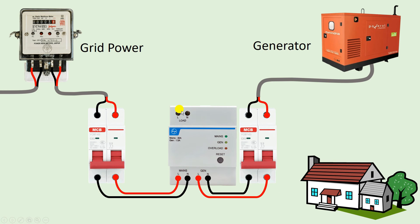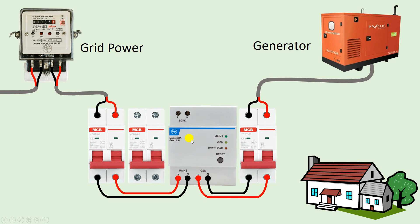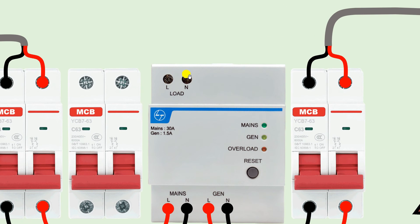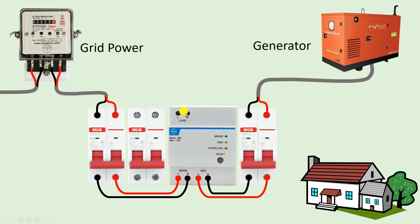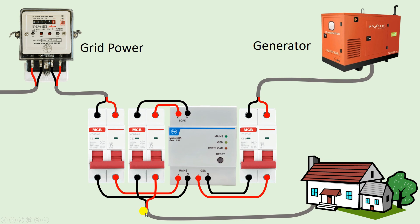Now, the power supply which goes to your home — in between you have to connect an MCB. Above this ATS you can see L and N terminals, and below this 'LOAD' is written, meaning the power supply going to your home will be through these terminals. Connect the phase and neutral from the load terminals to this MCB. From the output terminals of the MCB, take the power supply and connect it for your home. That is the complete connection you have to do.